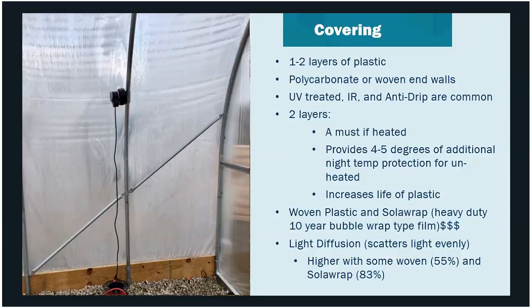A key tip for air inflation: most people pull air from inside the tunnel to inflate the two layers, which creates condensation between layers and reduces light infiltration. Instead, use a jumper kit — a flexible laundry or air duct tube attached to the end wall — to pull outside air for inflation. This minimizes condensation and allows more light to penetrate.